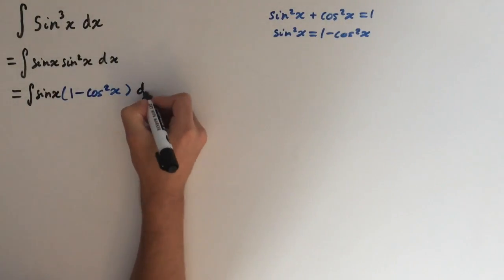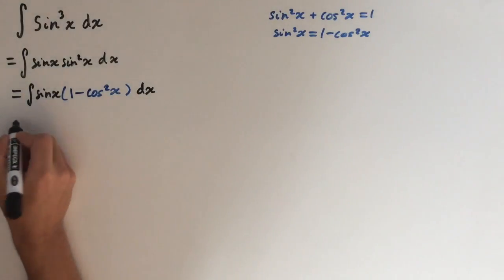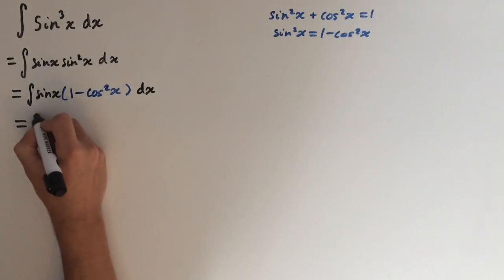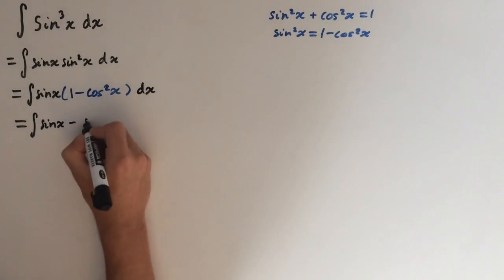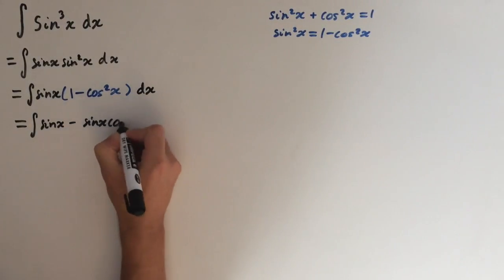So let's expand this out. This gives us the integral of sine of x minus sine of x cosine squared of x dx.